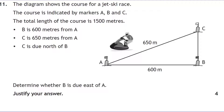Question eleven involves a triangle with markers A, B, and C on a jet ski course. The total course length is 1500 metres. We need to determine whether B is due east of A. This looks like a converse of Pythagoras question — if it's due east, there should be a right angle at the relevant vertex.